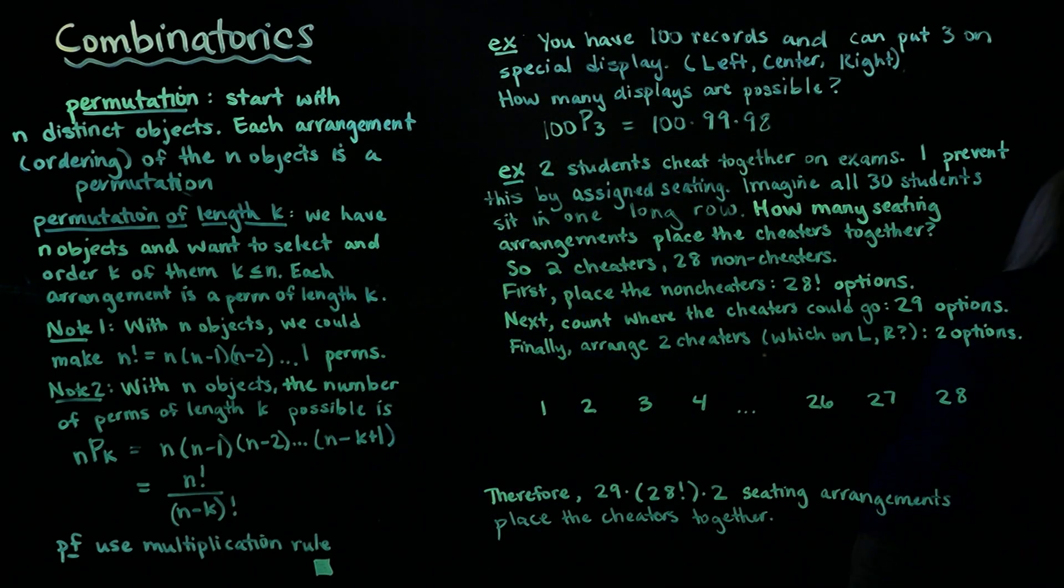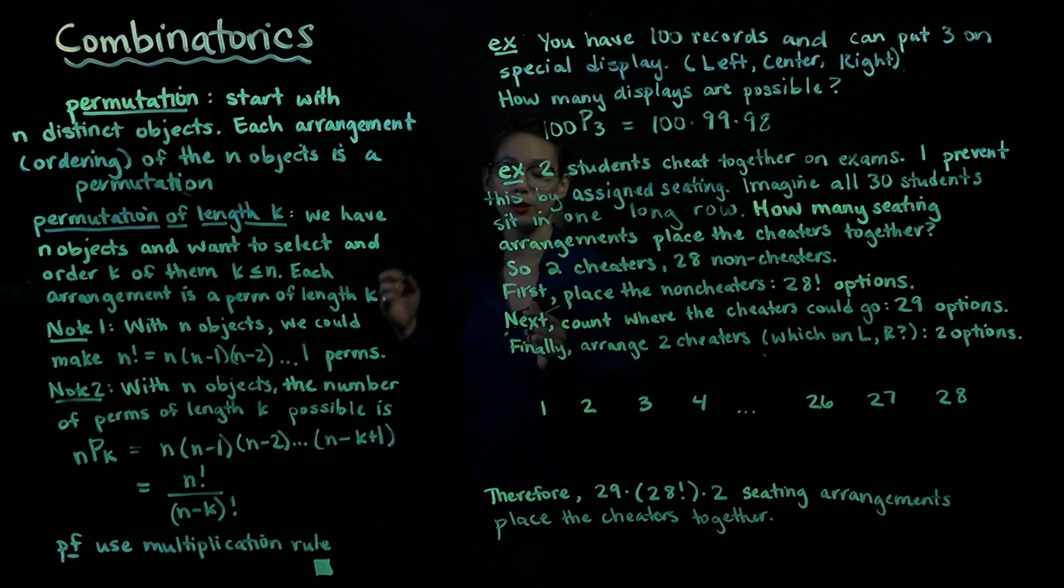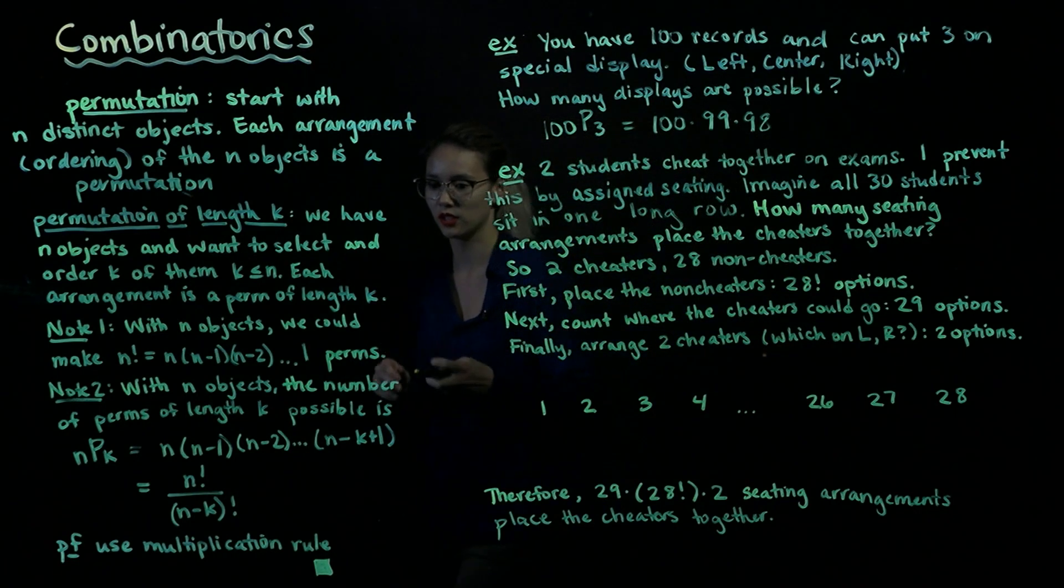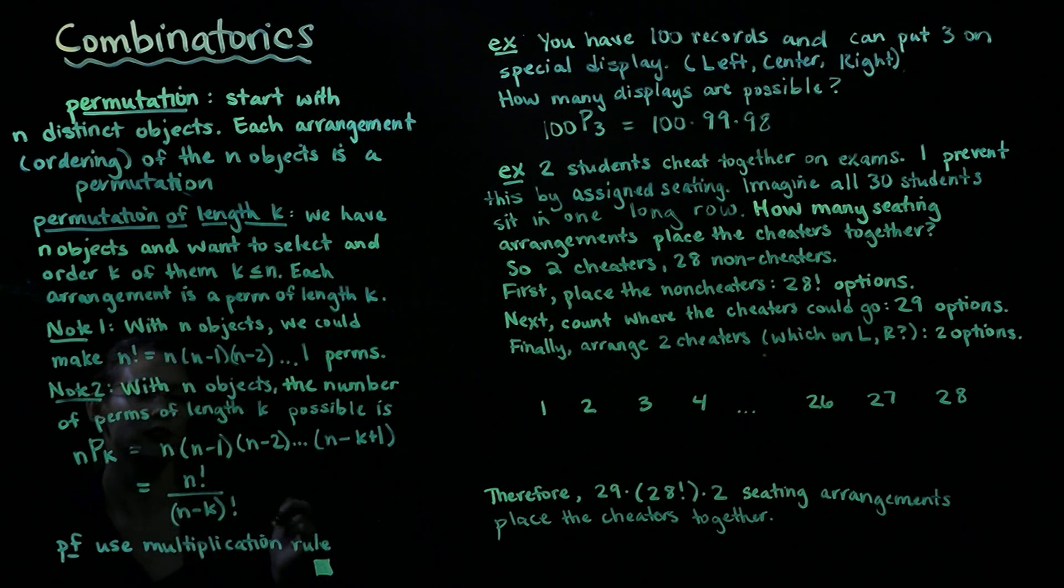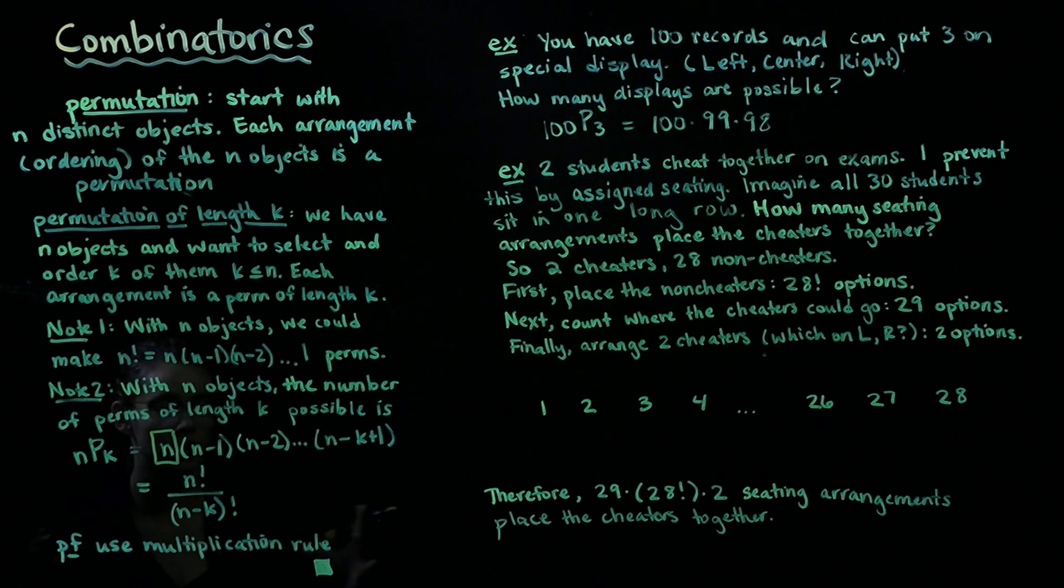So how can we think about this? Well, we will use the multiplication rule. If we are choosing k things out of the n, when we start at the very first slot here, we have n different ones to choose from because we haven't arranged any of them yet. So we have n different ones we can choose from, in other words there's n options here.